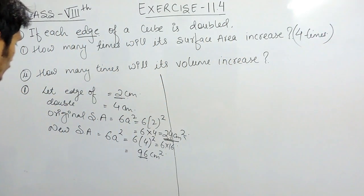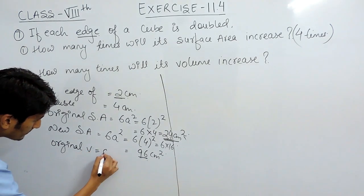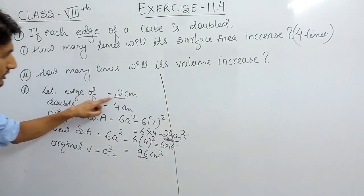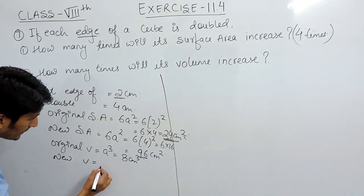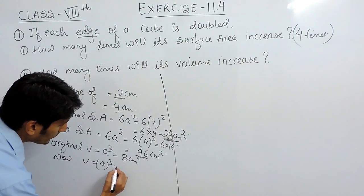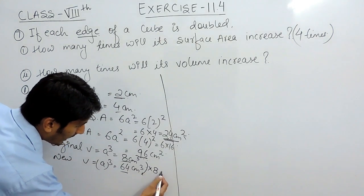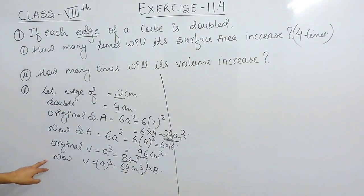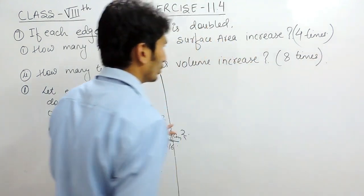Now let's find the volume. The original volume is a³ and the original side was 2, so it is 8 centimeter cube. The new volume with a = 4 is 4³ = 64 centimeter cube. Our initial volume was 8 and new volume is 64, so the volume has increased 8 times.